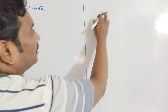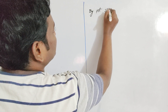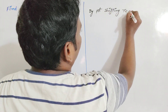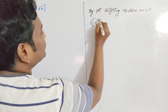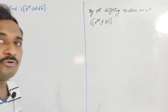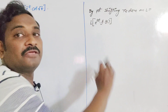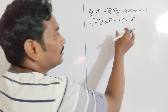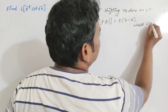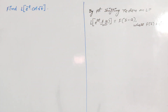Before starting this problem, I want to remind you of the statement of the first shifting theorem. By the first shifting theorem on Laplace transform, L of e^(at) into f(t) — suppose we have to find the Laplace transformation of a function in the form e^(at) into some function, then only we can apply the first shifting theorem. The result is F(s − a), where F(s) is the Laplace transformation of f(t).